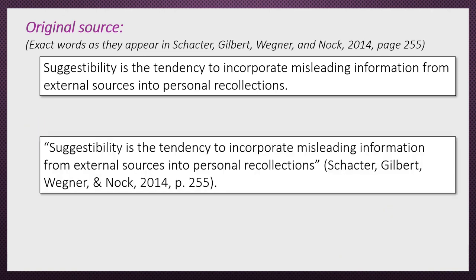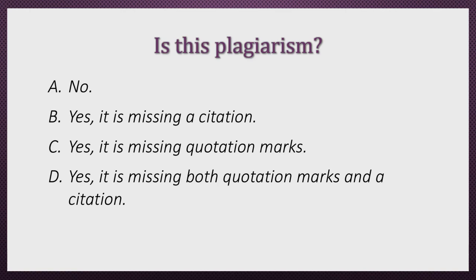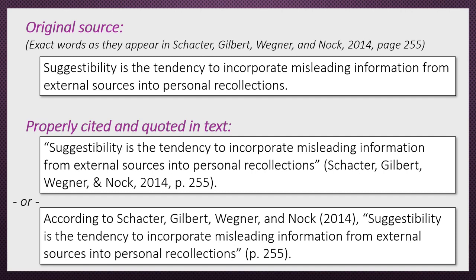How about this: "Suggestibility is the tendency to incorporate misleading information from external sources into personal recollections" (Schachter, Gilbert, Wagner, and Nock, 2014, page 255). Is this plagiarism? This is not plagiarism because it is properly cited and quoted. Citations don't necessarily have to be inside parentheses placed after the end of a sentence. Here's another version that works just as well: According to Schachter, Gilbert, Wagner, and Nock (2014), "Suggestibility is the tendency to incorporate misleading information from external sources into personal recollections" (page 255).